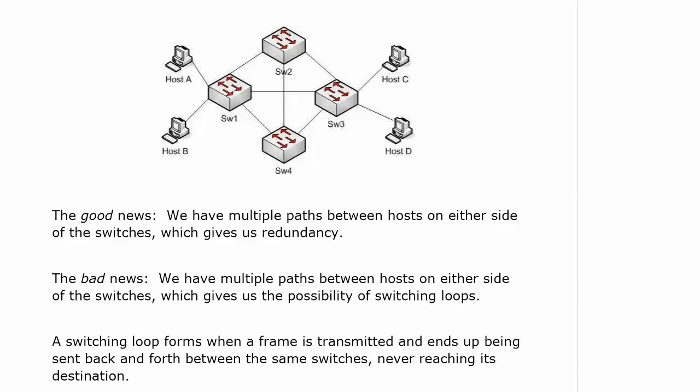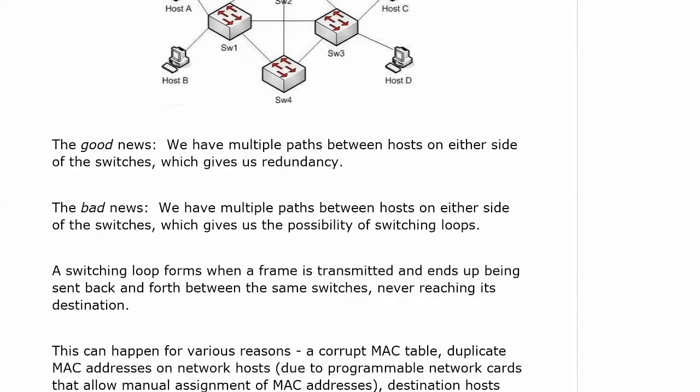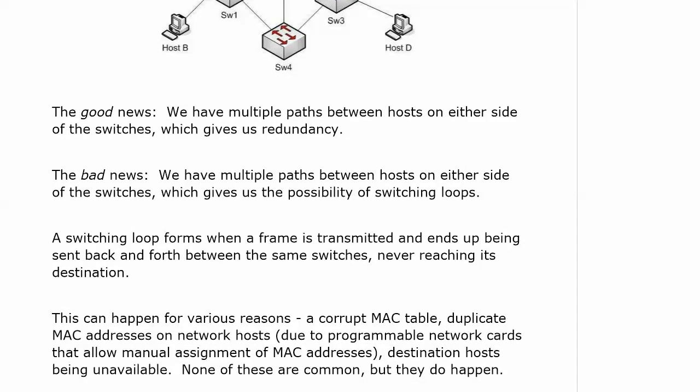A switching loop forms when a frame is transmitted and it ends up being sent back and forth between the same switches — it could go A, B, C, A, B, C, or 1, 4, 2, 1, 4, 2. This doesn't happen very often. Unlike routing loops — and keep those terms straight: we have switching loop possibilities and routing loop possibilities. Routing loops are almost always caused by a misconfiguration. But at layer 2, switching loops can happen because of a corrupt MAC table, duplicate MAC addresses on network hosts, or a destination host being unavailable.